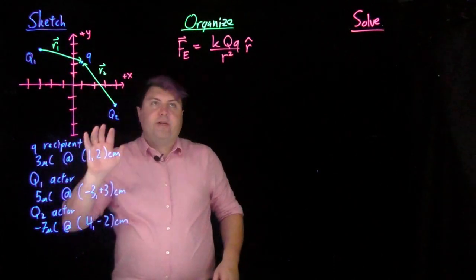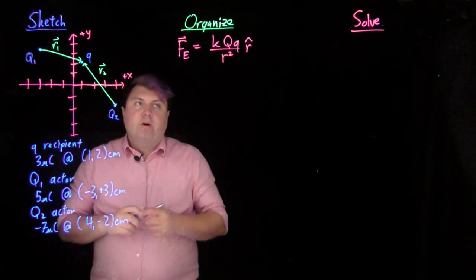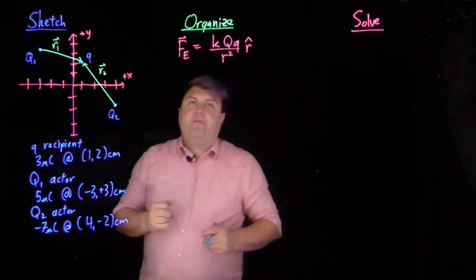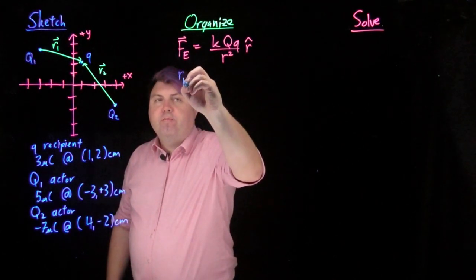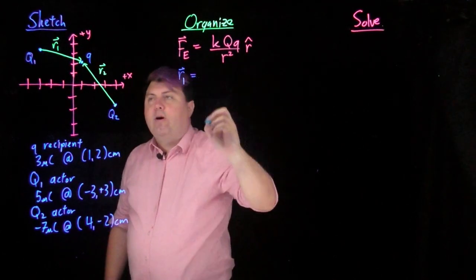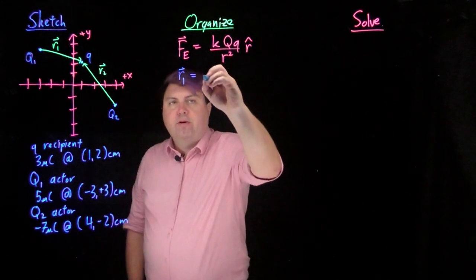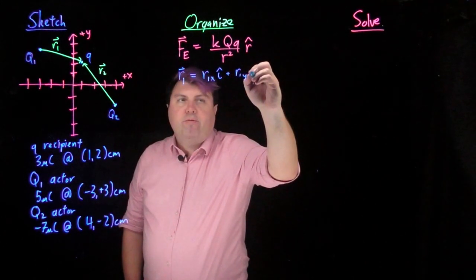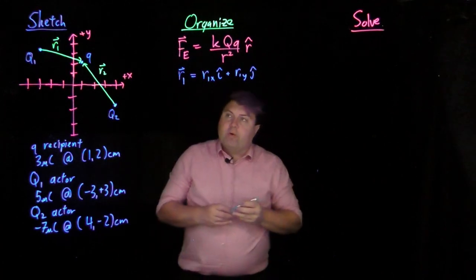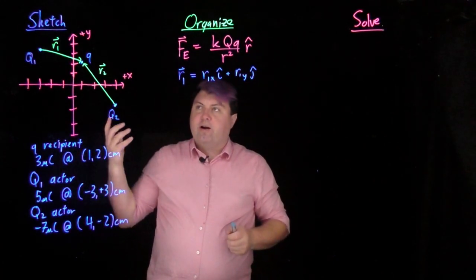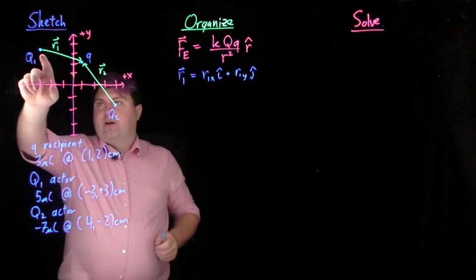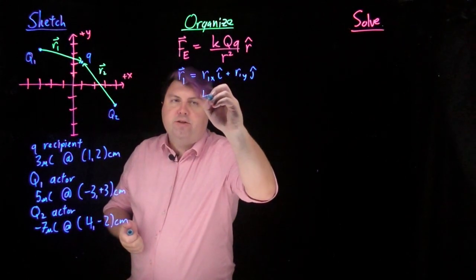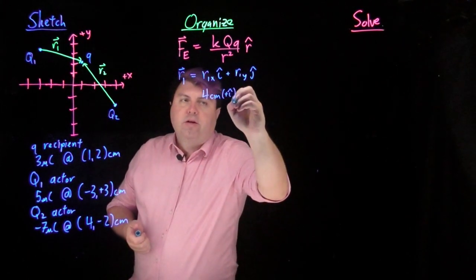We have all our information in our sketch. In the organized step, we have k, we have q, we have q — we really want to find these r vectors. Looking at r1, we can break r1 into the distance in the x direction times i hat plus the distance in the y direction times j hat. I'm at negative 3, I need to get to 1 — that's 4 in the positive x direction — so I write this as 4 centimeters positive i hat.